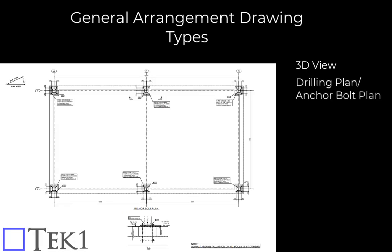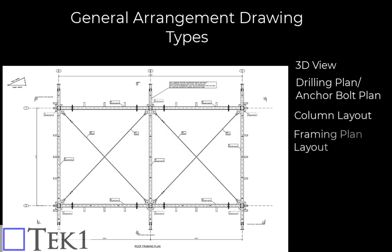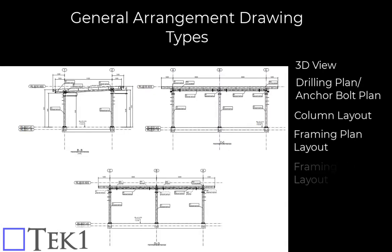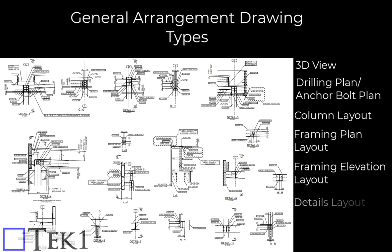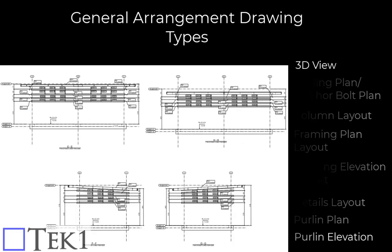The remaining drawings begin from the bottom of the structure, progressing to the top — like Drilling or Anchor Boot Layout, Column Layout, Roof Framing Layout, Framing Elevation, Detailed Supporting Framing, Purlin Plan, and finally Purlin Elevation Layout.